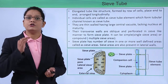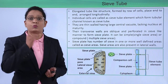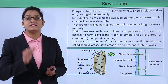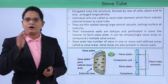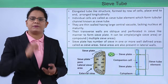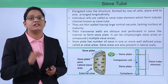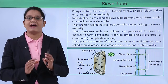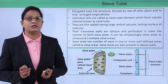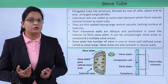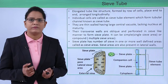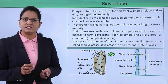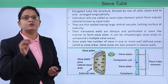The first type of cell is the sieve tube — elongated, row-like cells placed one on top of the other longitudinally. The individual cells are called sieve tube members, and together they form a channel known as the sieve tube. These sieve tubes are thin-walled cells with a central vacuole, but they do not have a nucleus. We will see how they function in the upcoming slides.